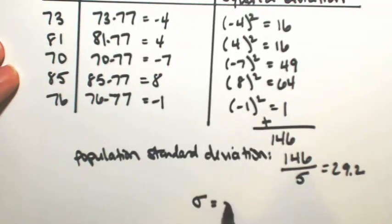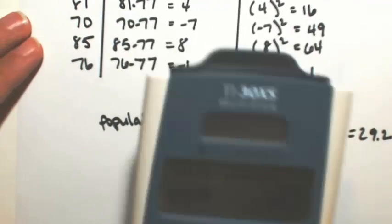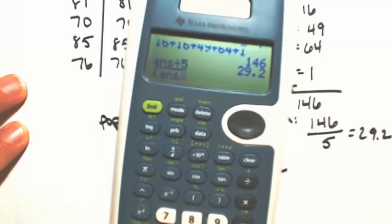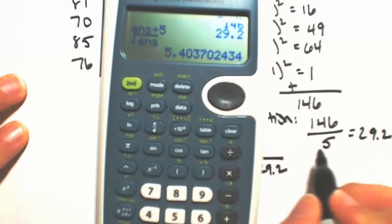Now we're going to undo what we did. So we're going to take the square root of the 29.2. And so we get about 5.4.